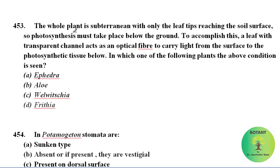The whole plant is subterranean with only the leaf tip reaching the soil surface, so photosynthesis must take place below the ground. To accomplish this, a leaf-like transparent channel acts as an optic fiber to carry light from the surface to the photosynthetic tissue below. This condition is seen in Frithia, a genus of succulent plants in the family Aizoaceae.